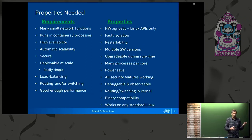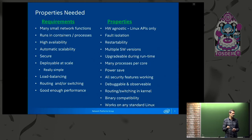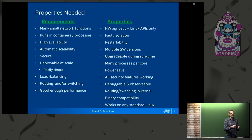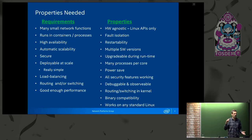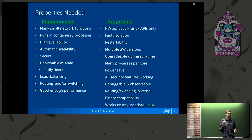Because we're talking about having millions of processes, you have to be able to support multiple software versions running at the same time. It should be upgradable during runtime, because you can't stop the system and upgrade all one million instances at the same time. You're always going to have many different versions of your software running simultaneously — they have to talk to each other and work. You'll even have multiple versions of the Linux operating system and hardware in this system because it's just so large.